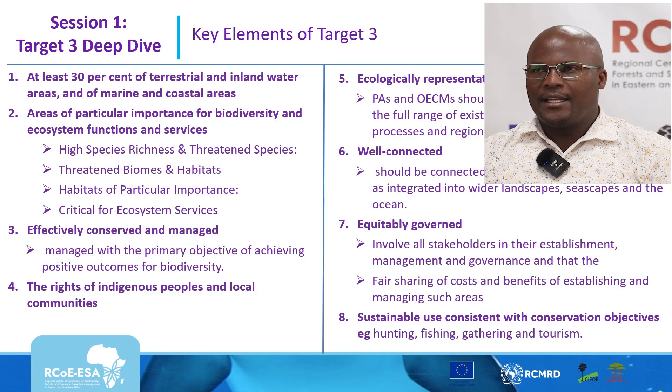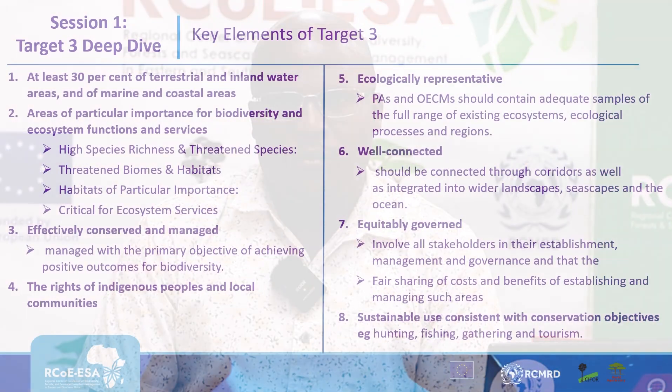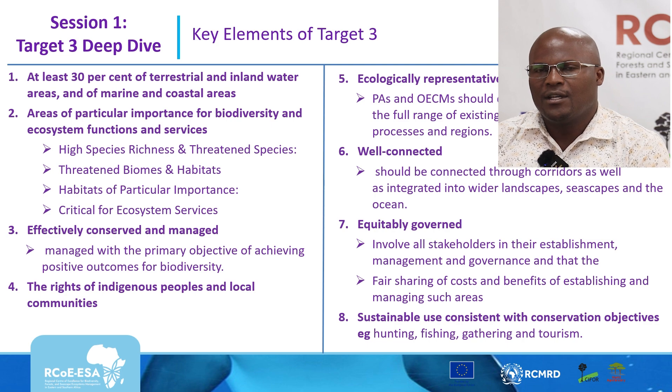The first element is to ensure that at least 30% of terrestrial and inland water areas and 30% of seascape ecosystems are conserved or protected. The second element is to ensure that the area protected has particular importance for biodiversity, ecosystem functions, and services. These include areas with high species richness, threatened species, threatened biomes and habitats, habitats of particular importance, and habitats critical for ecosystem services.